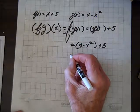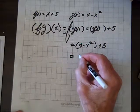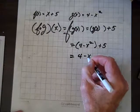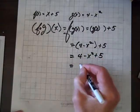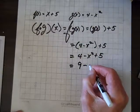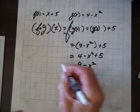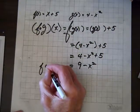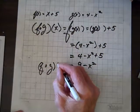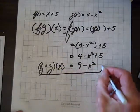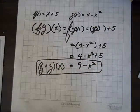So, that equals 4 minus x squared plus 5, which equals 9 minus x squared. And we're done. That's what f of g of x equals. Good.